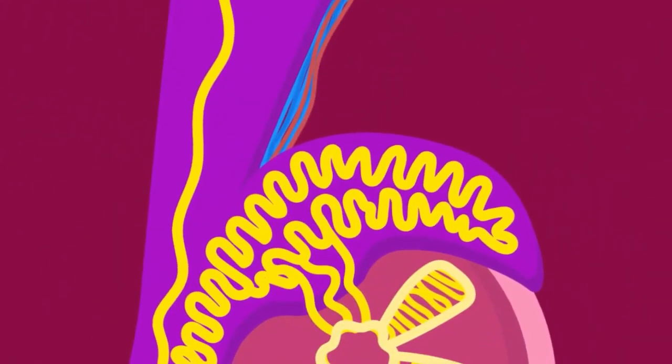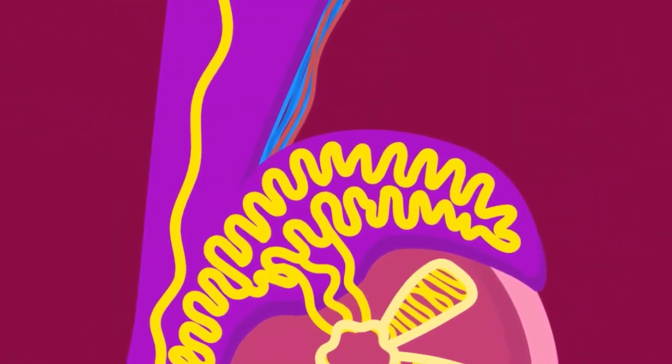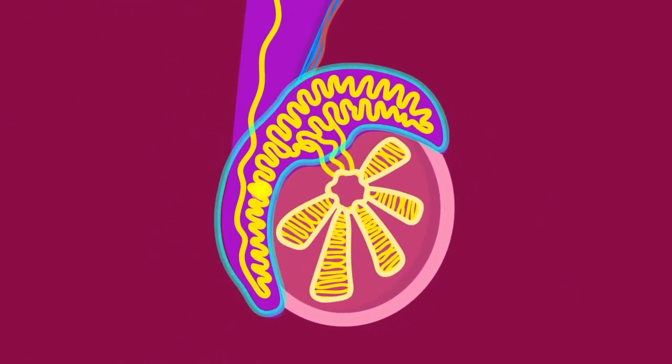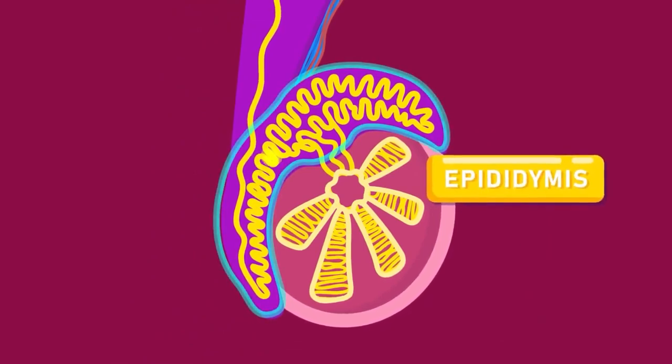There is a spermatic cord that contains blood vessels at the upper end of each testes. Leading from the end of the testes is a narrow, much-coiled tube, the epididymis.